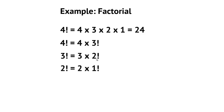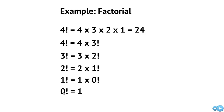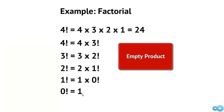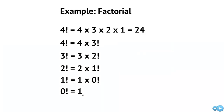Then 2 factorial is 2 times 1 factorial, and 1 factorial is 1 times 0 factorial. We have 0 factorial as our base case, which equals 1. If you're uncomfortable with 0 factorial being 1, you may want to do a Google search for 'empty product,' which discusses in more detail why an empty product has the value of 1.